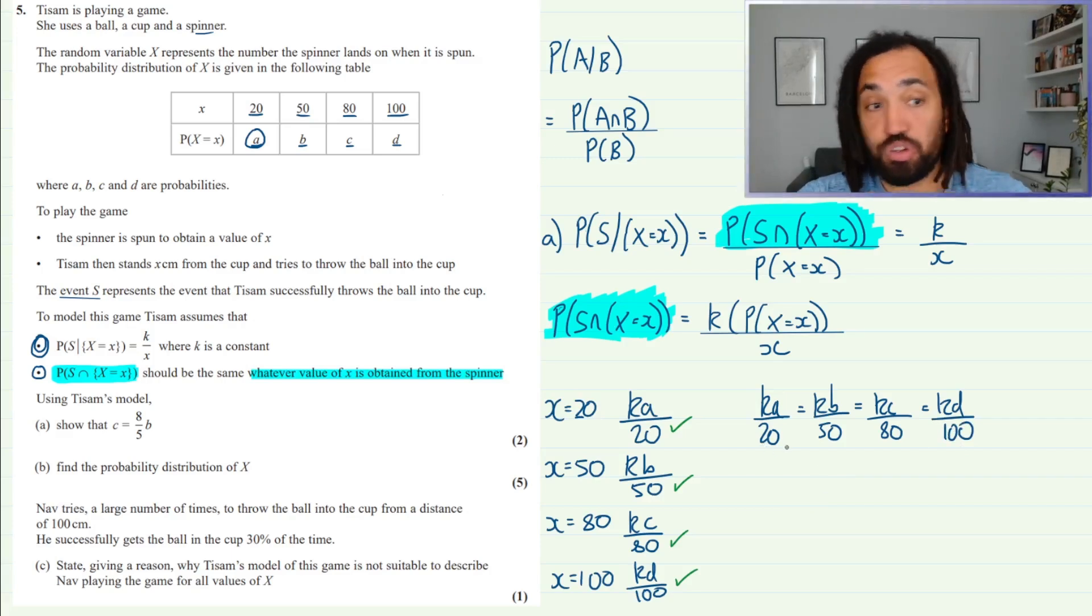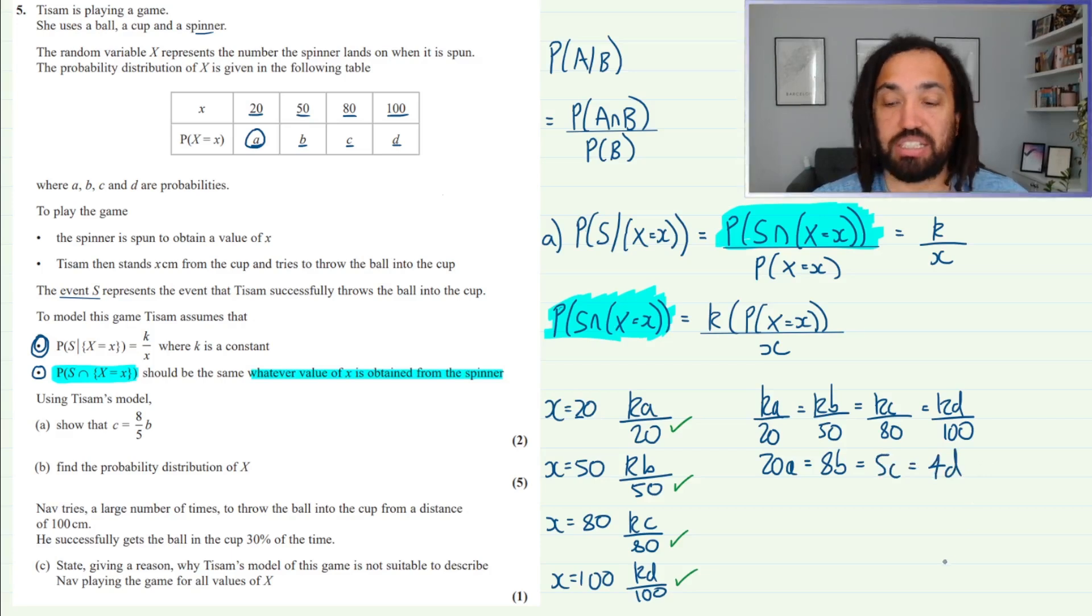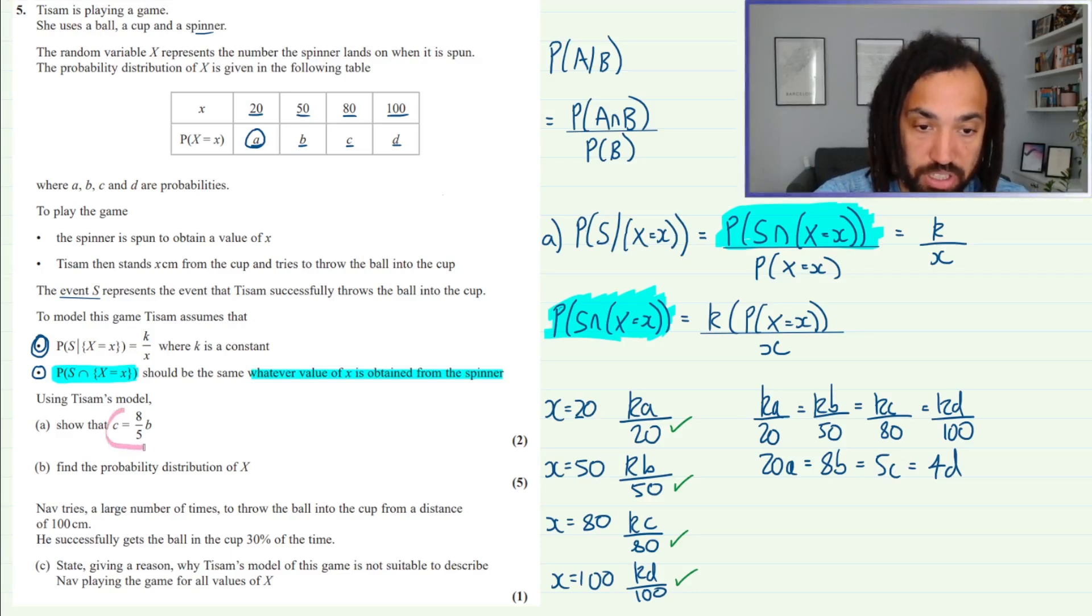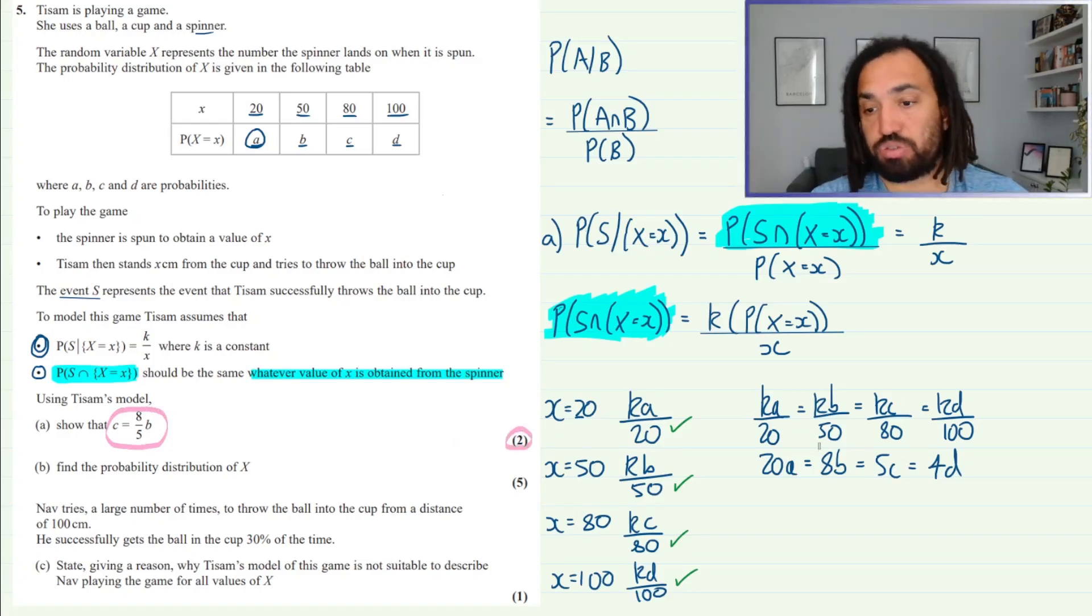Now we can divide through by K on this set of equations, and we can also find a common denominator, well not common denominator, but we can multiply by the lowest common multiple which is 400. And that will give us 20A is equal to 8B which is equal to 5C which is equal to 4D, and that makes it nice and easy. Now what have we been actually asked to prove? We've been asked to prove that C is equal to 8 over 5B for two marks. Crazy!